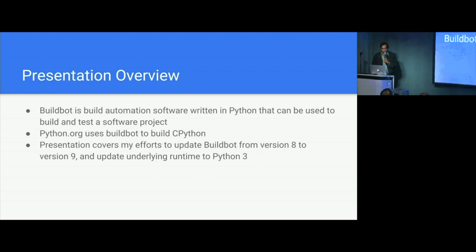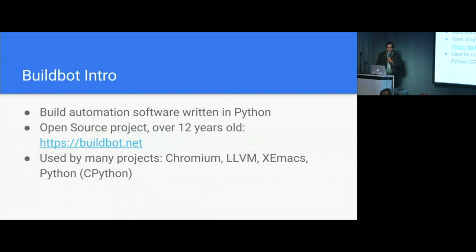There's a lot of things that went on with this migration, so I'll talk about BuildBot first. BuildBot is build automation software written in Python. The project is pretty old — over 12 years old. You can go to buildbot.net to find out more about it. It's open source, so you can pip install it and try it out yourself. It's used by many projects including Chromium, LLVM, Xemax, and the Python project.